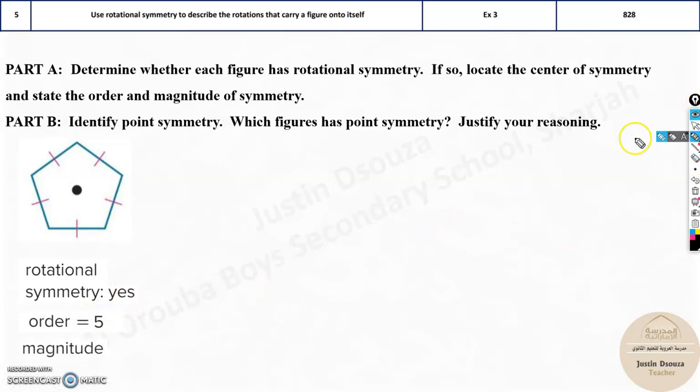Now what about the magnitude? Magnitude is always given by 360 degrees, the total angle, divided by the order that is in this case five. You should just solve it in the calculator. So 36 times 2 will be 72. Yes, 72 degrees. So this is the answer. We have to find the order and divide it by 360 and that's it. You will get the answer for the magnitude.